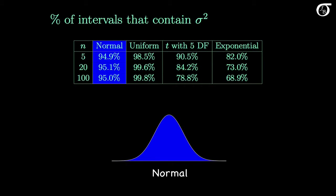First we'll be sampling from the normal distribution, so the normality assumption is true. We can see that regardless of the sample size, the percentages in the blue column of the table are close to 95%. Theoretically the procedures are working perfectly here, and the percentages for this column are equal to exactly 95%. But we're dealing with the results of a simulation of 100,000 intervals, so there is a little chance and variability involved.